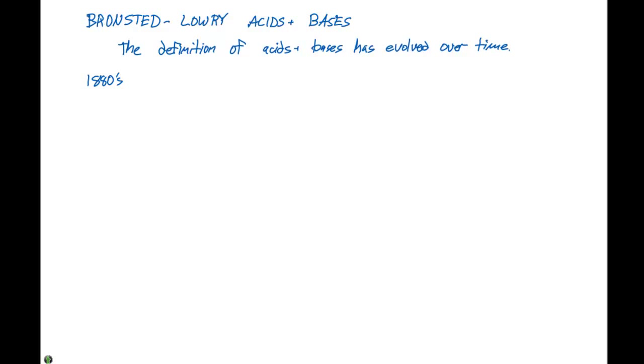In the 1880s, a chemist by the name of Arrhenius proposed the following. He said an acid is going to be a substance that when dissolved in water increases the concentration of H plus ions.